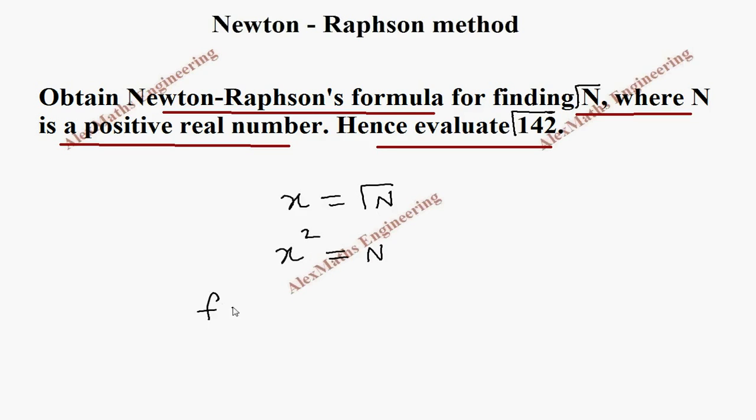Using this we are going to write the function f of x which is x square minus n. Now its derivative f dash of x is 2x.